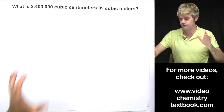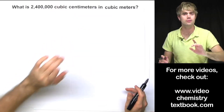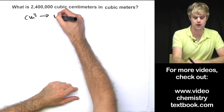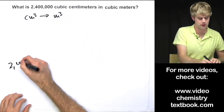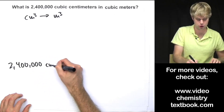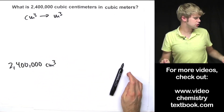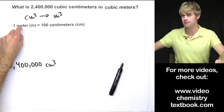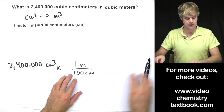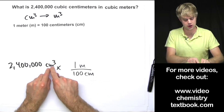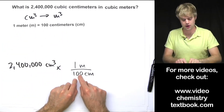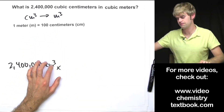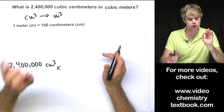Now let's look at units of volume. What is 2,400,000 cubic centimeters in cubic meters? The answer might surprise you. We're going from centimeters cubed to meters cubed, starting with 2,400,000 cubic centimeters. The relationship between meters and centimeters is that there are 100 centimeters in 1 meter. But as we saw before, don't think you can write a conversion factor with just 100 centimeters on the bottom — those are regular centimeters, not cubic centimeters.